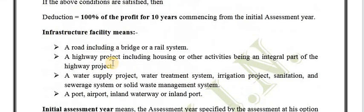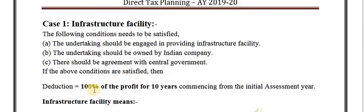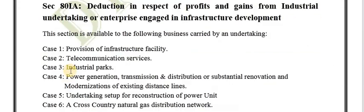The infrastructure facilities the enterprise should provide include road or highway projects, water supply projects, airport projects, or Indian waterway inland ports. If you are in this business, you will have 100% profit deduction under Section 80 IA for 10 years from commencement, starting from the initial assessment year. So if you begin investing this year, you will have deductions of up to 100% for the next 10 upcoming assessment years.